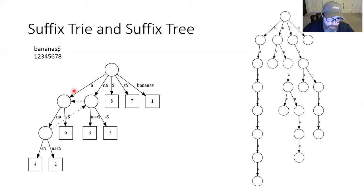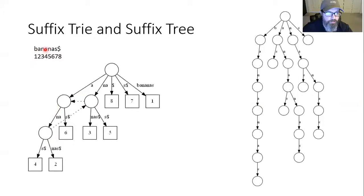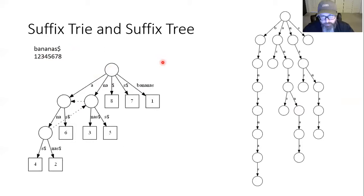Let's try it on bananas. Going left to right: A — it splits, so A is repeated, length 1. Then A-N-A — it splits again, so A-N-A must be repeated. That's length 3. Then N-A — it splits, so N-A occurs more than once, but that's only length 2 — not the longest. None of the others split. So the longest repeated substring is A-N-A.